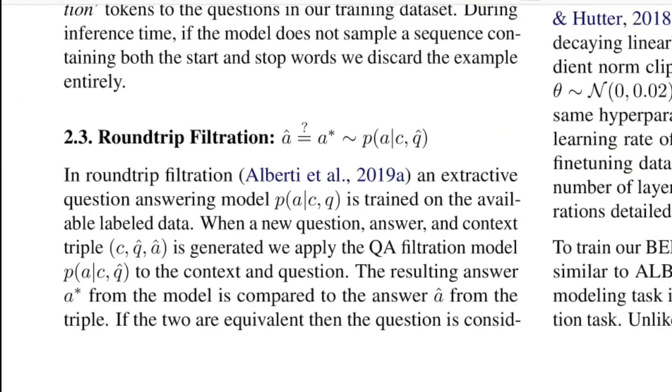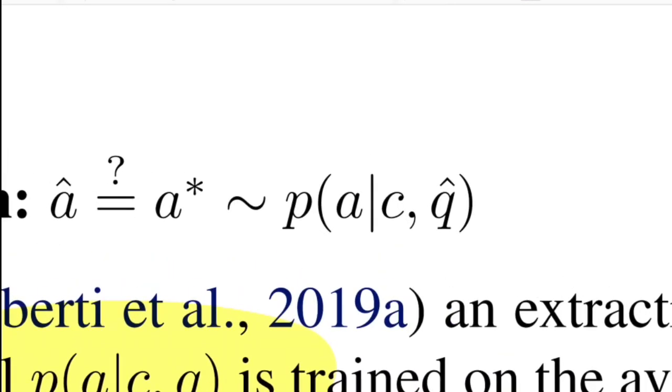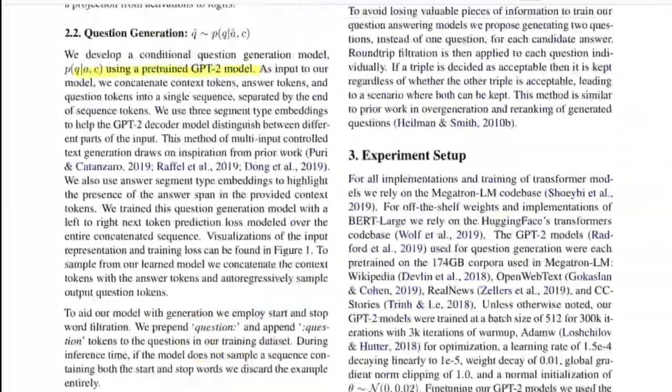The final step is round trip filtration. The aim for this step was to only keep questions that are valid and remove others. For this they again use the half split of the training data from SQuAD and train a typical question answering model. During inference you would pass in the context and the questions generated as part of the previous step. Now what this model thinks should be the answer—if that matches the answer that we have already generated as part of the first step, then we consider this question to be valid.